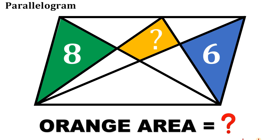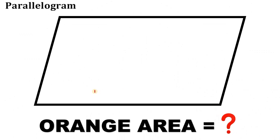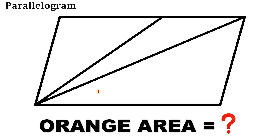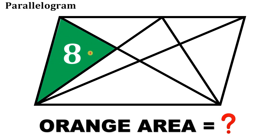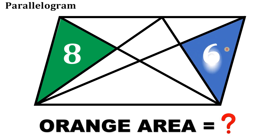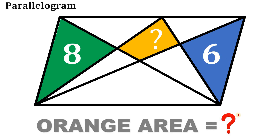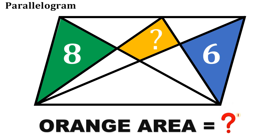Can you solve this geometry challenge? Here's the question. Let's start with a parallelogram and draw four segments. The region colored in green has an area of 8 square units, and the region colored in blue measures 6 square units. The question is: what is the area of the orange region? Pause this video and see if you can answer this question.